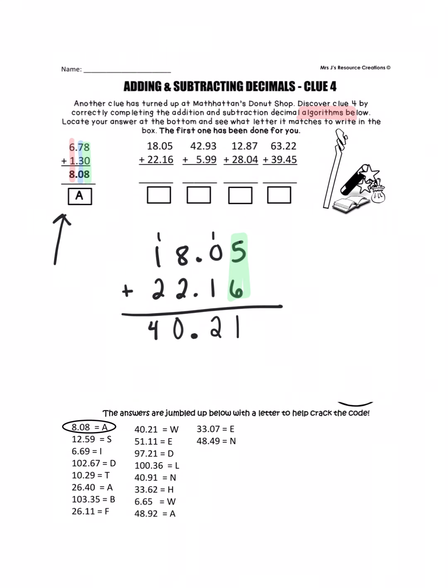So I need to record my answer and then figure out what letter matches my answer. I'm going to look on my list down here for the number—let's see, where is it? Here it is. So that's going to be a W. That goes in this spot.